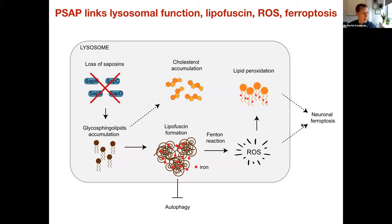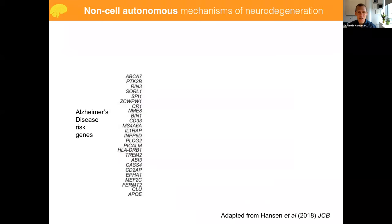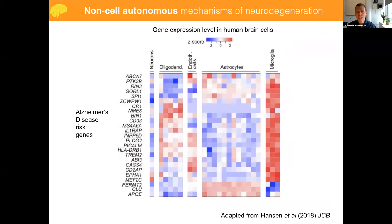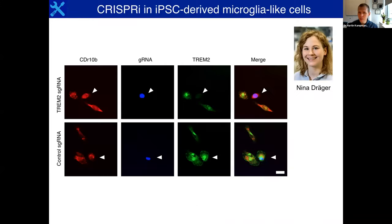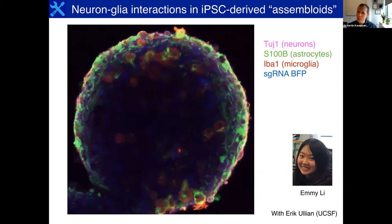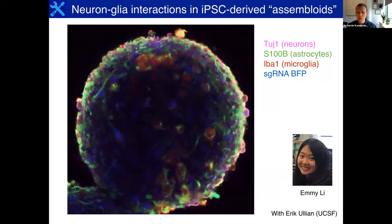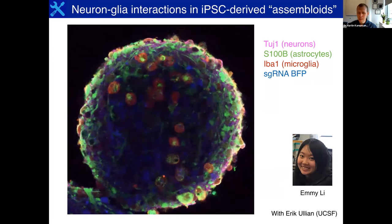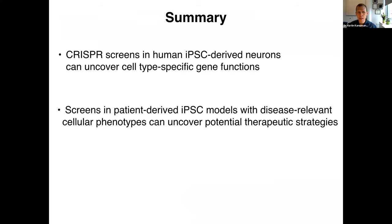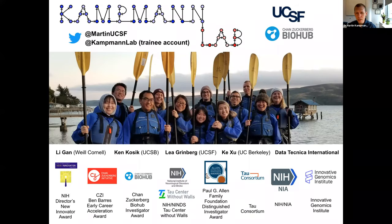In the interest of time I will skip over the final slides, which covered the fact that glia are really important — for example, microglia in Alzheimer's disease — and that we have screening systems in other cell types like microglia and assembloids where we want to look at the interaction of neurons and glia in a defined model. I just want to thank my wonderful lab members, our collaborators, and our funding sources. Thank you so much for listening, and I'm looking forward to your questions.